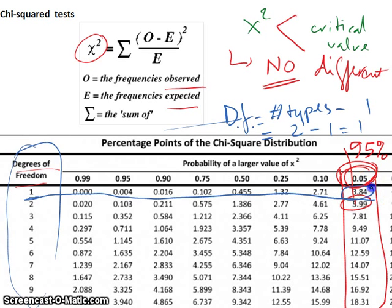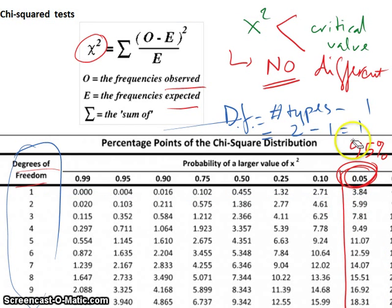The number that we want to compare our chi-square for is 3.84.